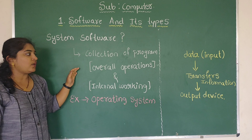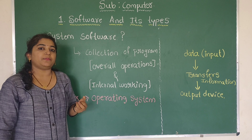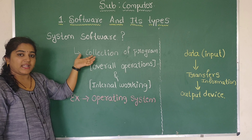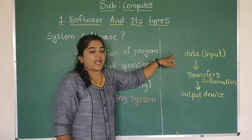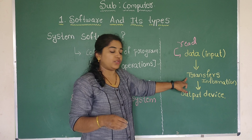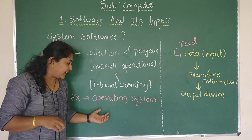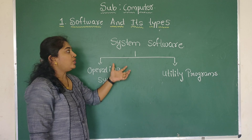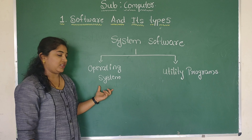What is system software? System software is a collection of programs that controls the overall operations and internal working of the computer system. It reads data from input devices, processes it, stores it in memory, and gives the output. A good example is the operating system — without it the computer will not work. There are two types of system software: operating system and utility programs.